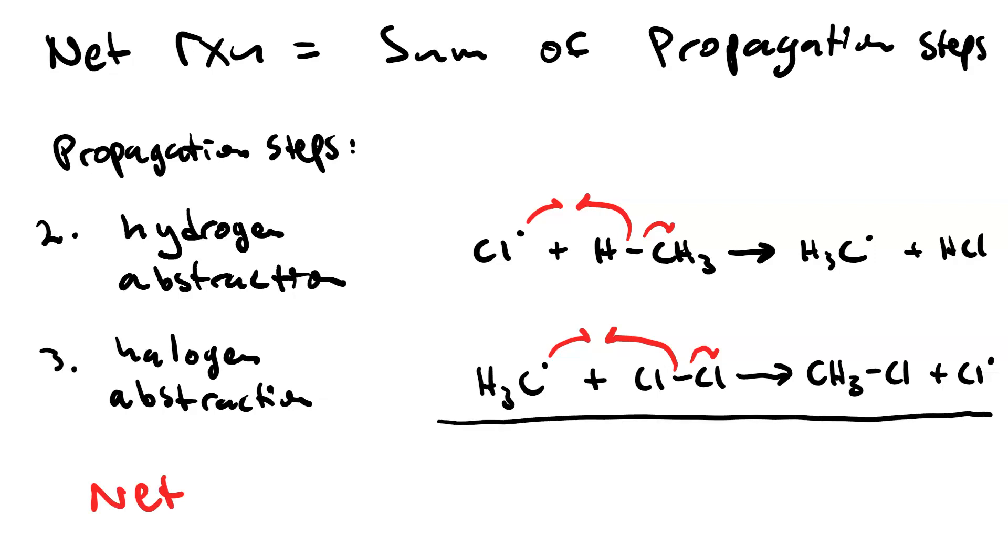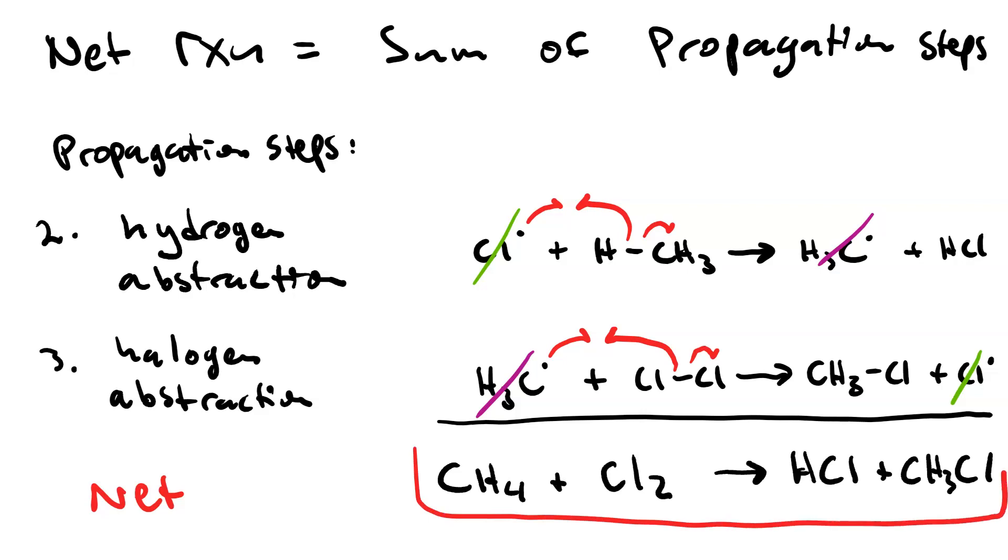The net reaction is the sum of these two steps. Since chloride is on the reactant side in the first step and the product side in the second propagation step, we can cancel it. Since methyl radical is on the product side of the first step and the reactant side of the second propagation step, we can cancel it. What's left over is our net reaction. Methane, CH4, plus chlorine, Cl2, yields hydrochloric acid, HCl, plus methyl chloride, CH3Cl.